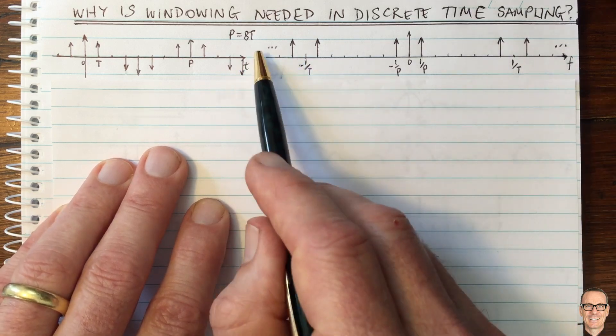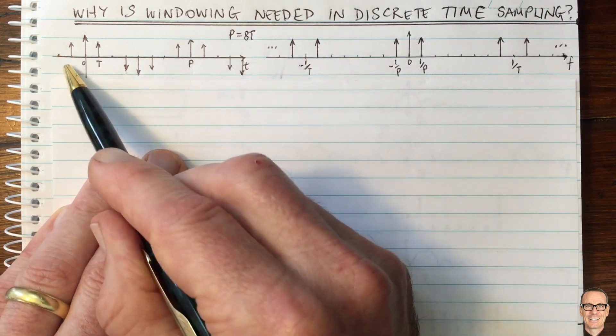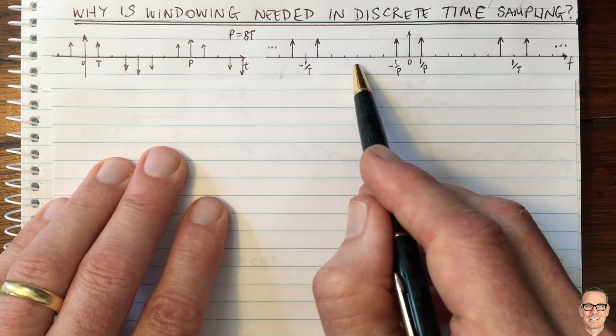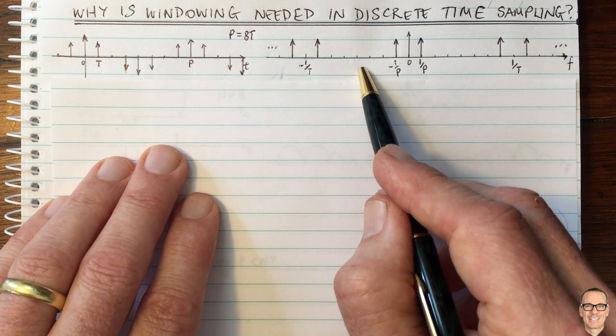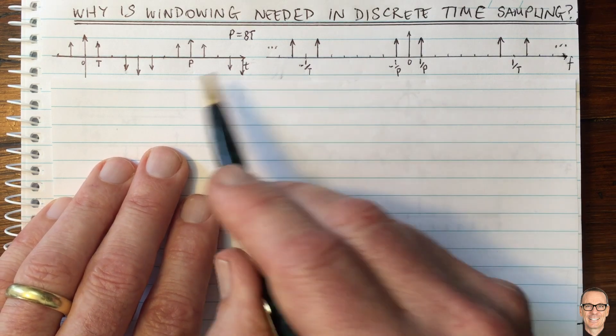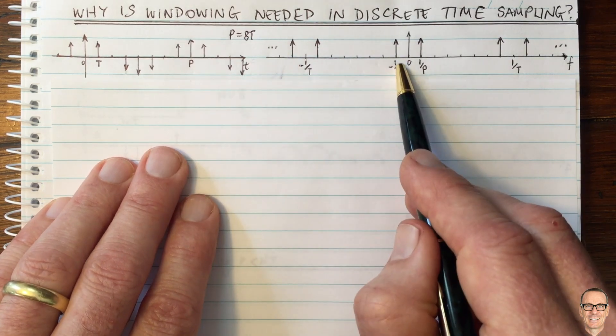For more information about the Fourier transform of a sampled waveform, check out the show notes for this video. You'll find lots of videos on sampling explaining all of this process.